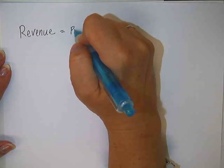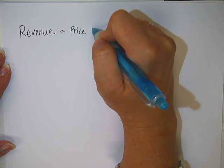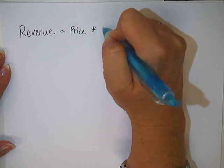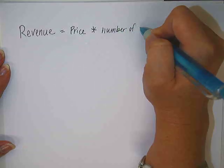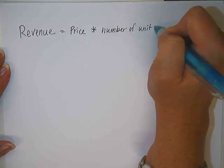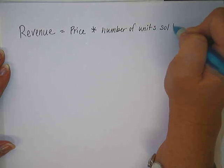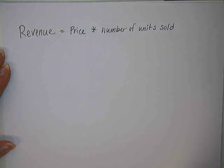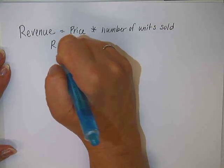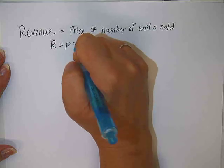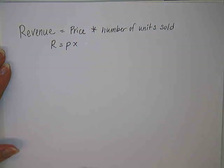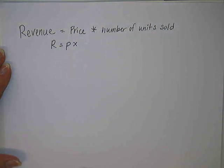Revenue is equal to price times the number of units sold. Twelve donuts at a dollar each would be $12 in revenue. Let's abbreviate this with just some variables. R for revenue equals P for price times X per unit.